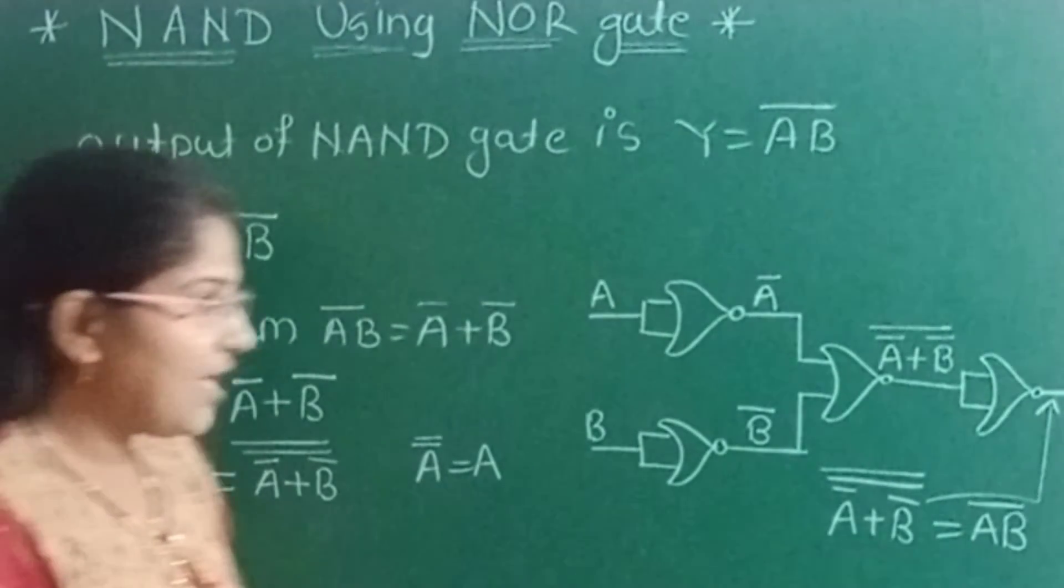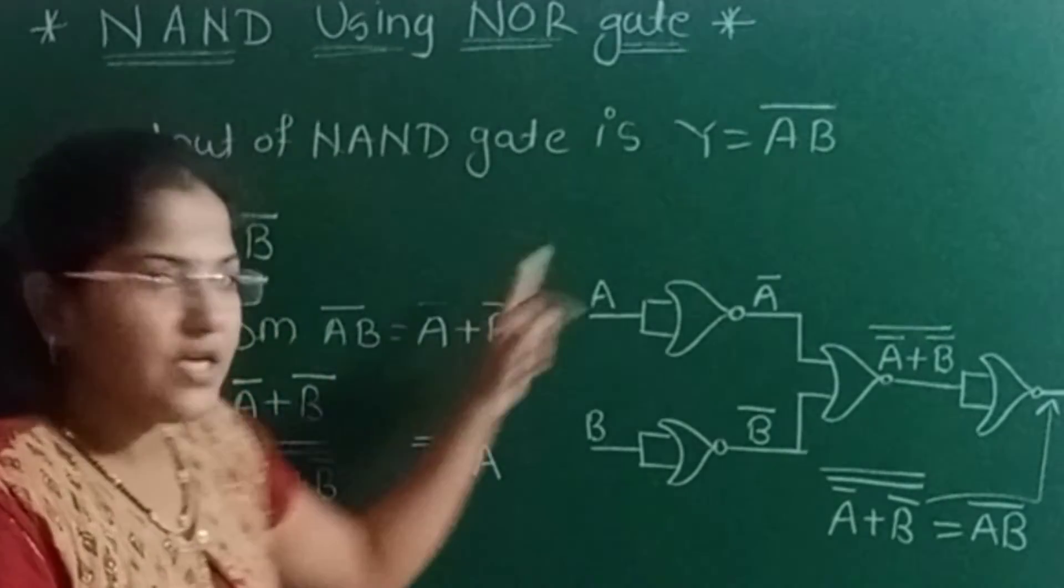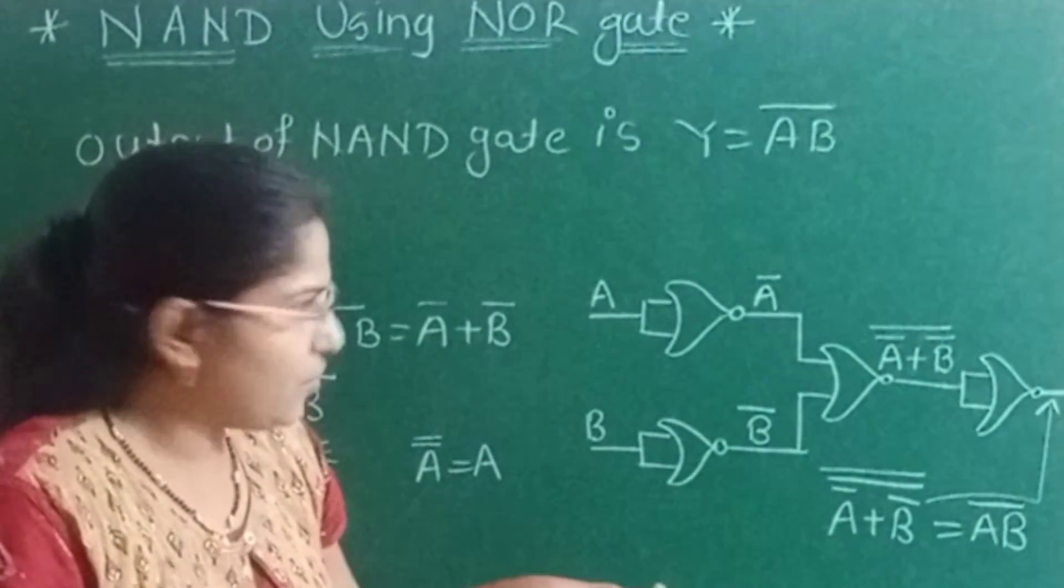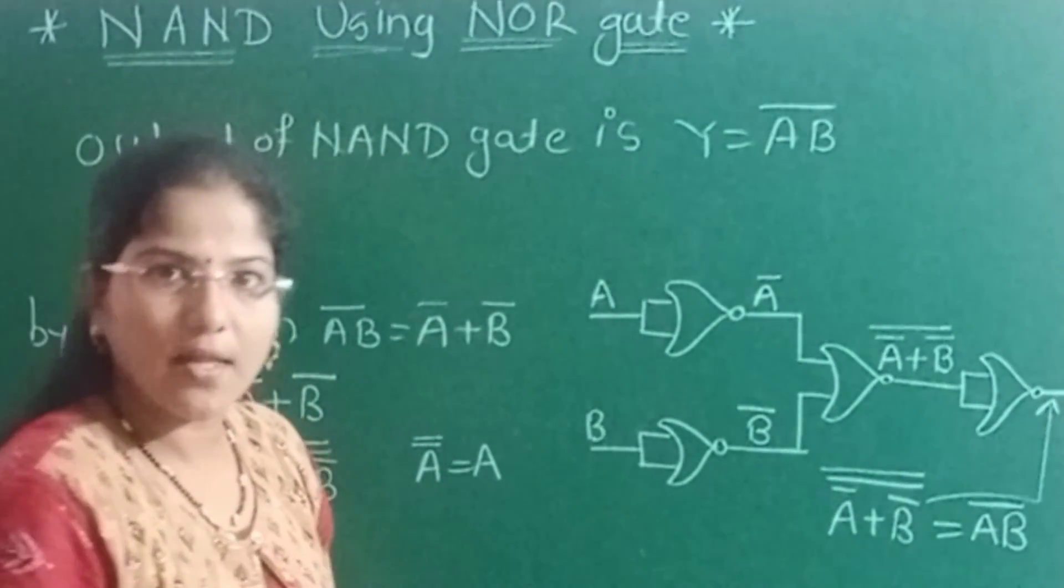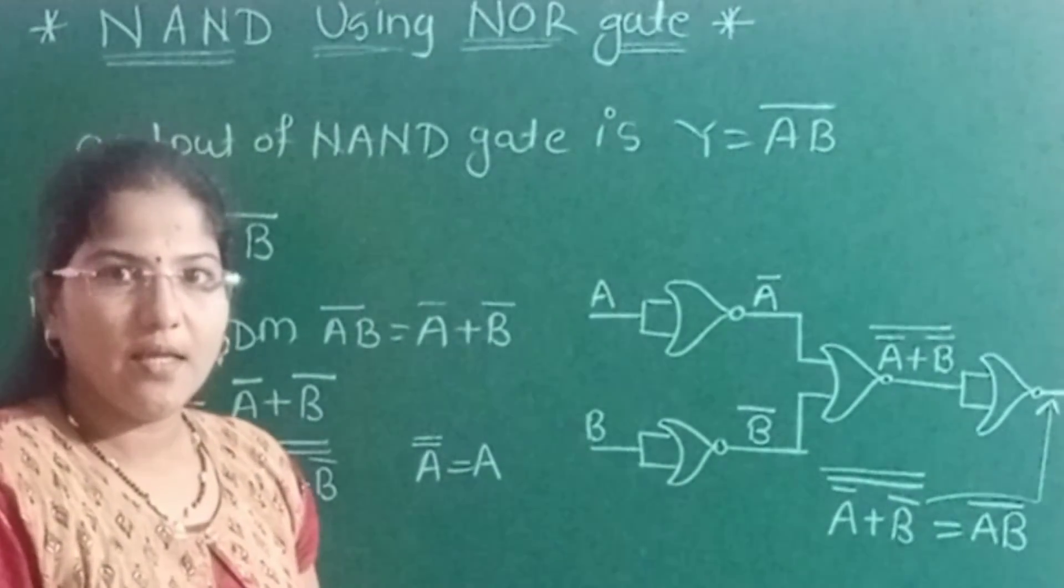So we are getting the output of the NAND gate, but in this circuit we have not used a single NAND gate. We have used only the NOR gate. This is how the NOR gate acts as the universal gate.